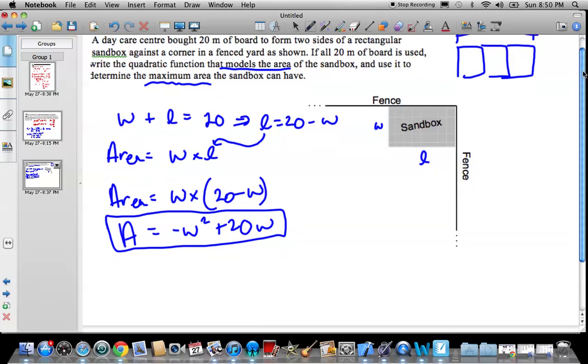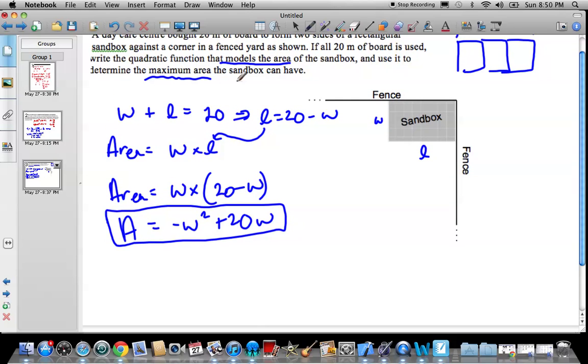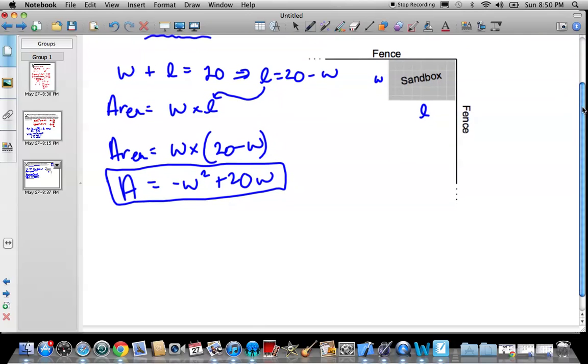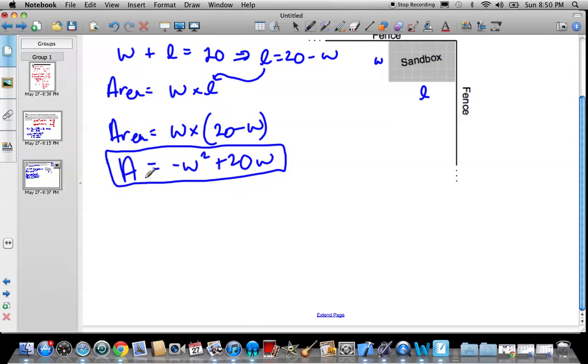Now I got to find, determine the maximum area. So in order to determine the maximum area, I basically have to find the vertex of this guy. You see it has a reflection, which is good because it's going to have a maximum. If there wasn't a negative here, then we'd have a minimum, which wouldn't make sense. A minimum area of the sandbox would be zero. So that doesn't really make a lot of sense. So let's find the maximum of this guy.